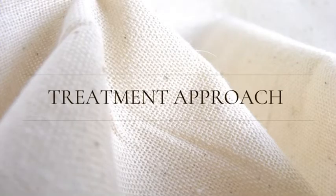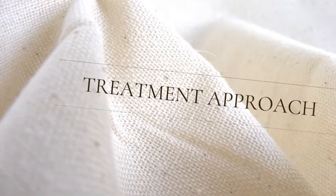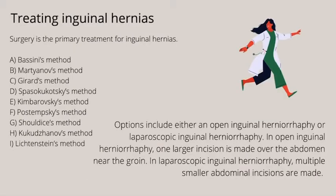Treatment approach: there are different types of treatment for inguinal hernia, including open surgeries and laparoscopic surgeries. Traditional hernia repair surgery treats a hernia by repairing the weakness in the abdominal wall. A cut incision is made so that the surgeon has a direct view of the hernia, and the repair is then done through this incision. This is called open surgery.